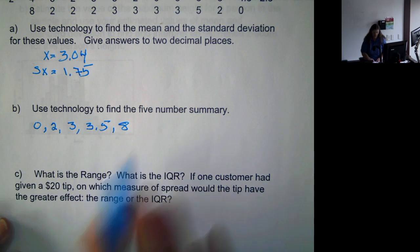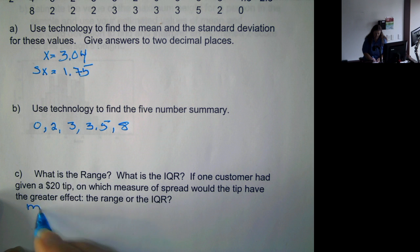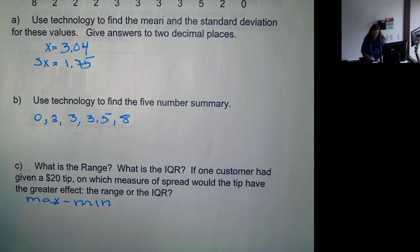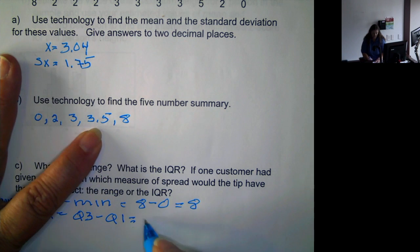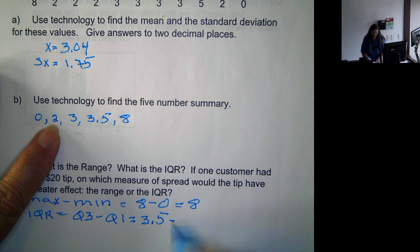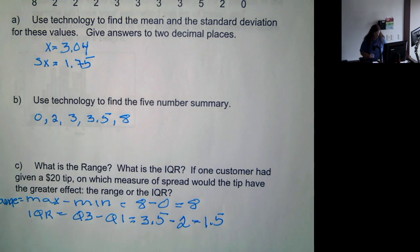Now we want the range. The range is the max minus the min, which would be 8 minus 0 or 8. IQR, or interquartile range, is Q3 minus Q1. Q3 is 3.5, Q1 is 2. So that's an interquartile range of 1.5.